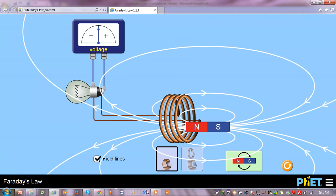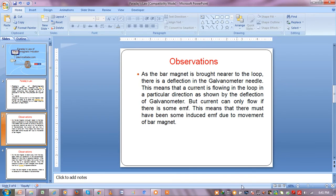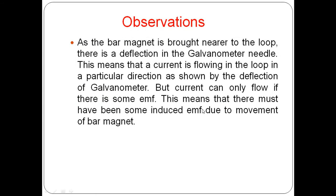From this experiment, we can draw some observations. As we have seen, as the bar magnet is moved nearer to the loop, there is a deflection in the galvanometer. In the experiment we used a voltmeter instead of a galvanometer, but if you had used a galvanometer, the same response would have been there. This means a current is flowing in the loop in a particular direction, as shown by the deflection of the galvanometer. But the current can only flow if there is some EMF, which means there must have been some induced EMF due to movement of the bar magnet.